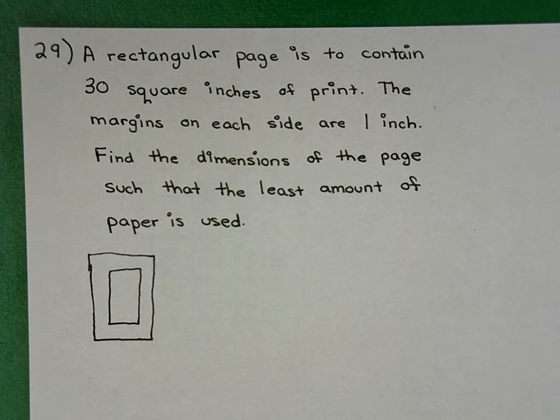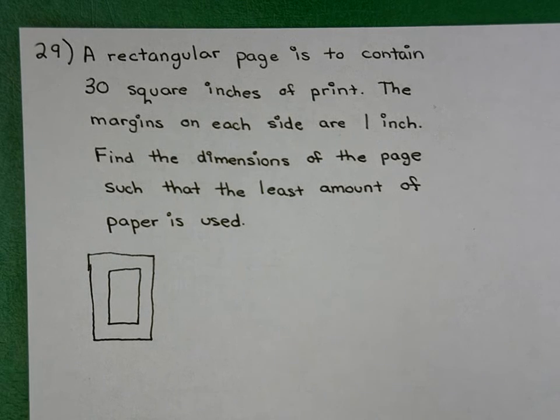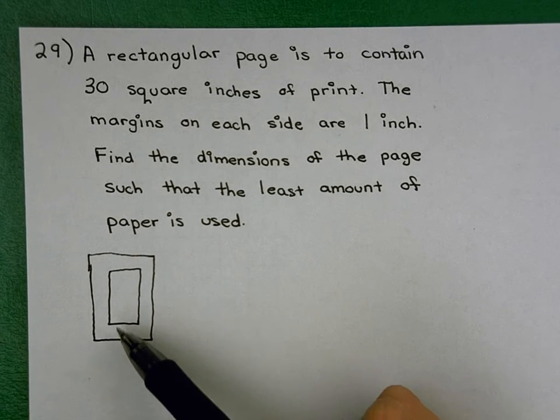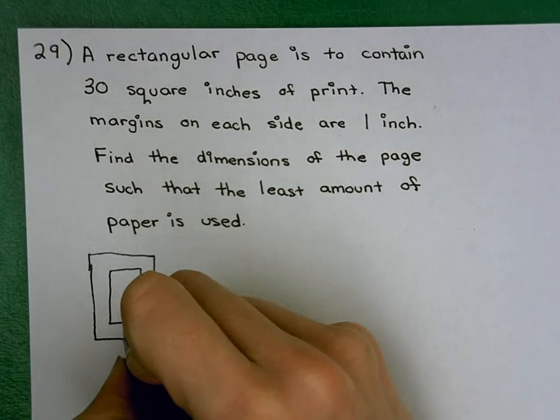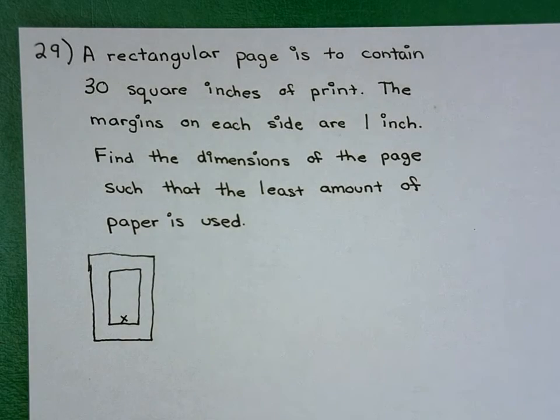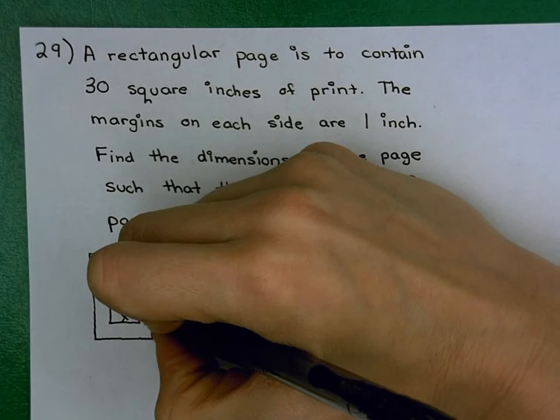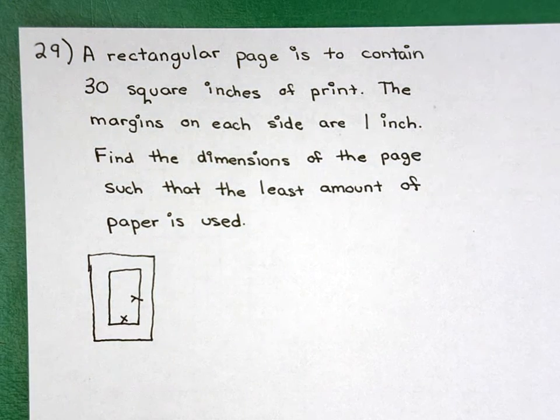1 inch margins on every side. It doesn't matter which one you call X or Y. We can call the outside X or the inside X. I'm going to go ahead and call the inside X in this case. You could call the outside X if you'd like, and I'm going to call this side Y. So X and Y are my printed region.